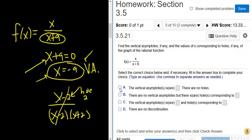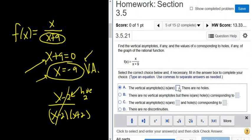So it's going to be choice A. The vertical asymptote is, singular, x equals negative 9. Remember, it's always x equals for a vertical asymptote.